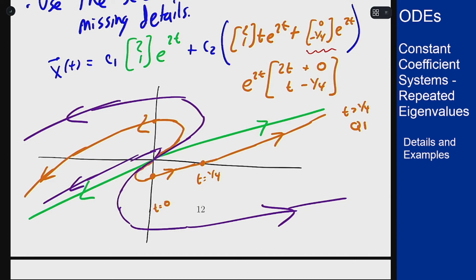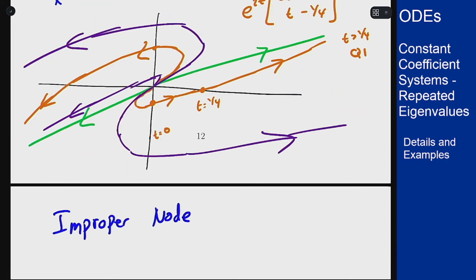So this type of graph goes under the name of an improper node. And for this in particular because everything's flowing away from zero it's an improper nodal source. We got this because the sign of the eigenvalue was positive. You can imagine the exact same graph going in reverse getting an improper nodal sink if the eigenvalue was negative.